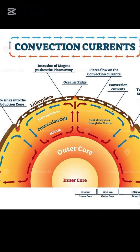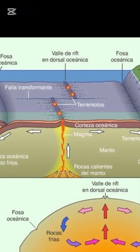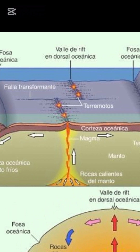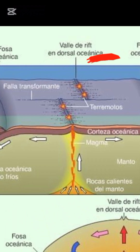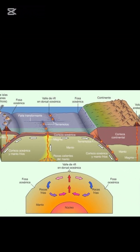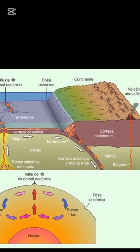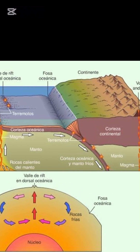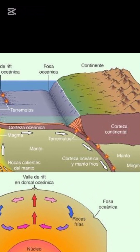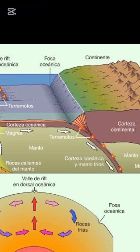This convection current plays a crucial role in plate tectonics. The rising heat material, which is called magma, pushes the plates apart at mid-ocean ridges, such as the mid-Atlantic ridge. As new crust is formed, older crust is pushed away and eventually sinks back into the mantle at the subduction zone, like the trench near America.